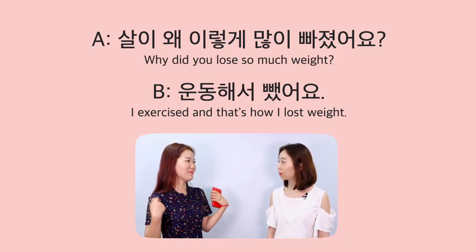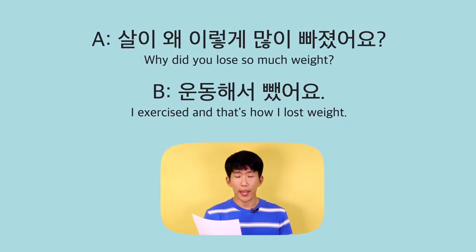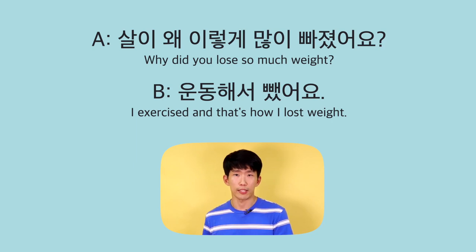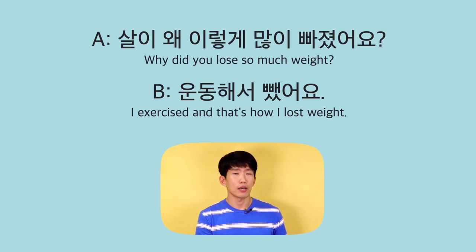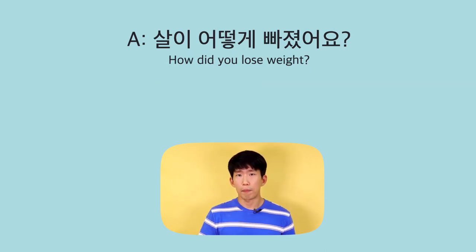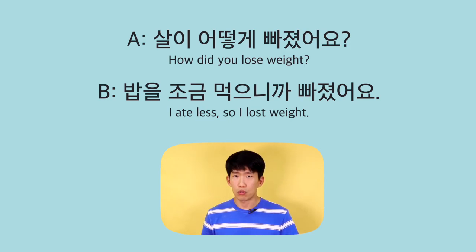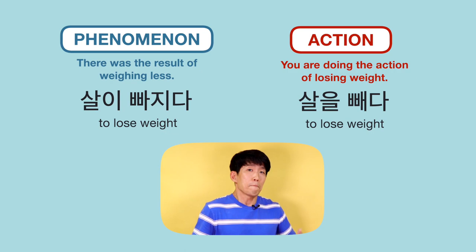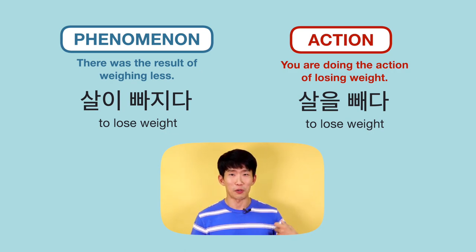One last sample conversation, switching the positions of 빠지다 and 빼다. A says: 살이 왜 이렇게 많이 빠졌어요? — assuming the person didn't try, but the weight just went down. B replies: 운동해서 뺐어요 — 'I exercised and that's how I lost weight.' So 살이 빠지다 can be used in a question, and 살을 빼다 describes the active effort. For example, 밥을 조금 먹으니까 빠졌어요 describes the result, while 살을 빼다 is your active effort to lose weight.